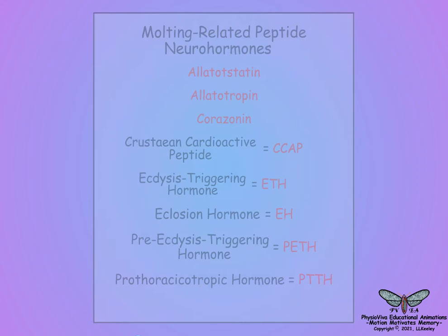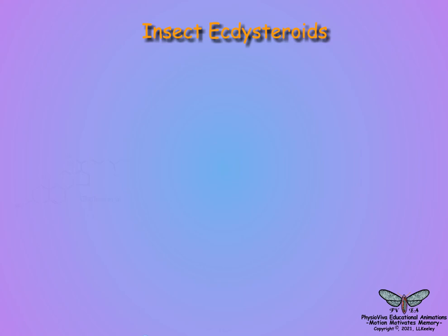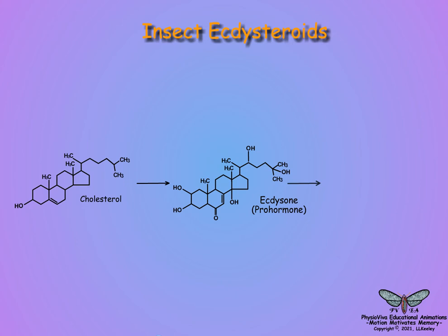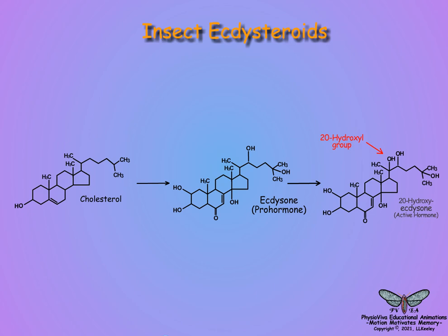Early studies on the initiation of insect molting demonstrated that a molt-stimulating hormone from the prothoracic gland was a steroid derivative of dietary cholesterol and was named ecdysone. Subsequent studies showed that ecdysone was a pro-hormone precursor for 20-hydroxy-ecdysone, the actual molting hormone that is synthesized at the tissue level by the target cells.